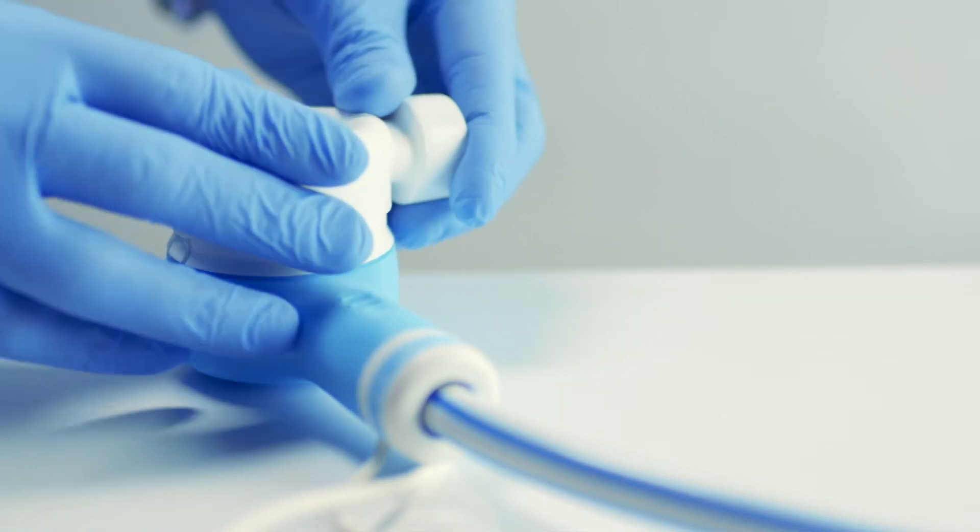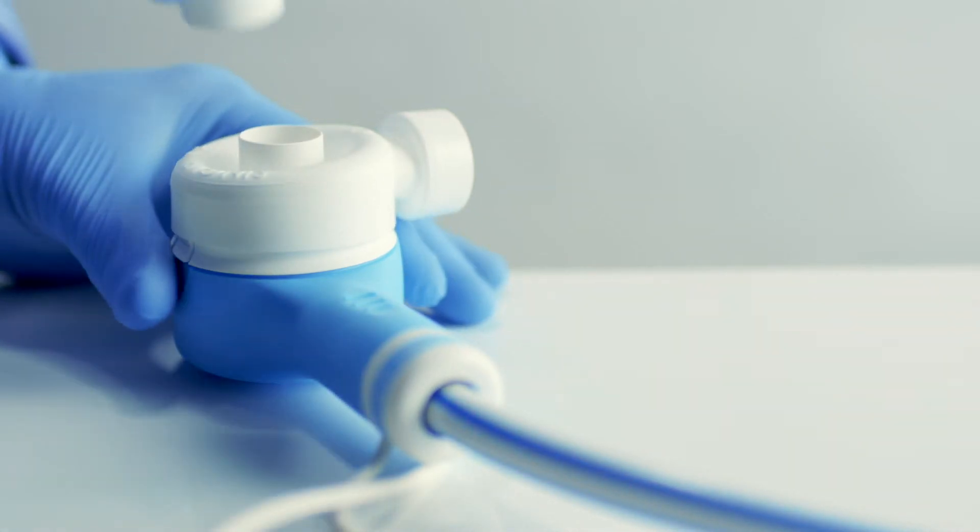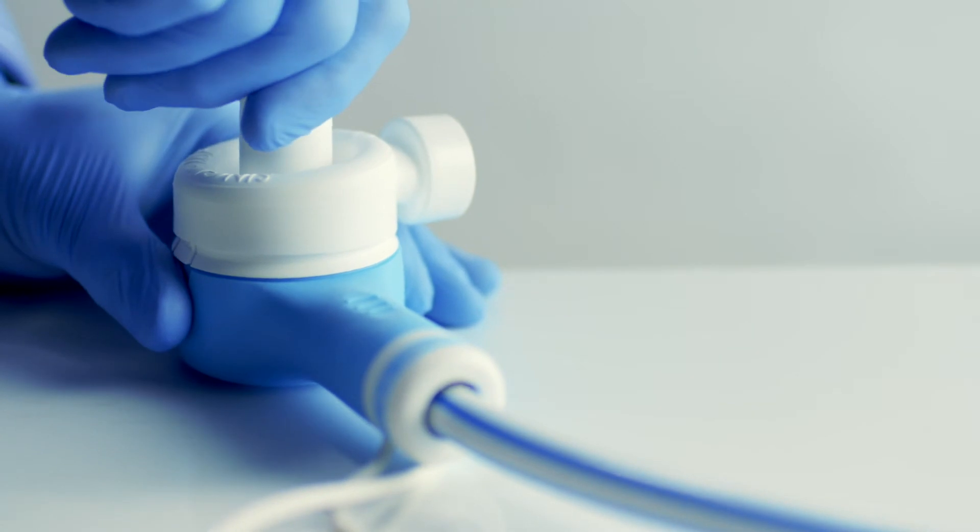If anaesthetic gas scavenging is being connected, fit an AGS diverter over the exhalation valve. Connect a mouthpiece or a face mask as desired.